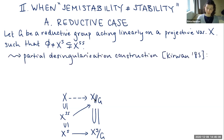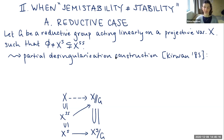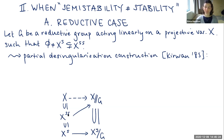In 1985, Frances Kirwan published the partial desingularization construction, which is a way of partially desingularizing this quotient — resolving the singularities that come from the presence of strictly semi-stable points.